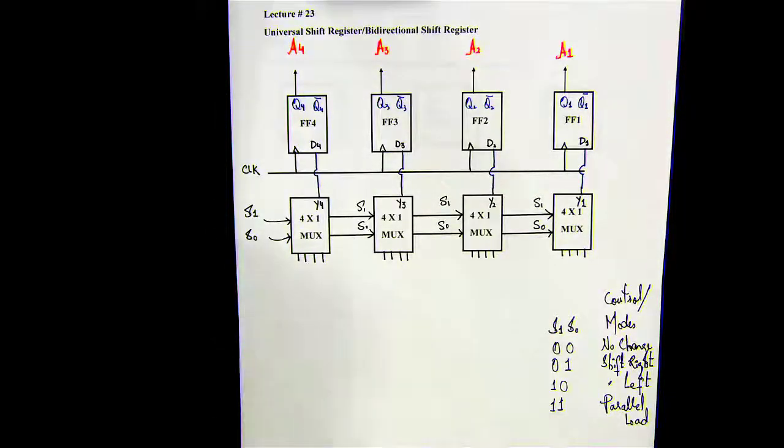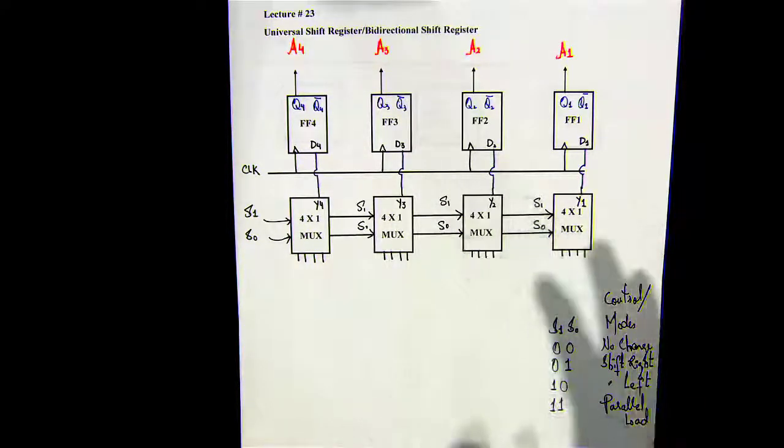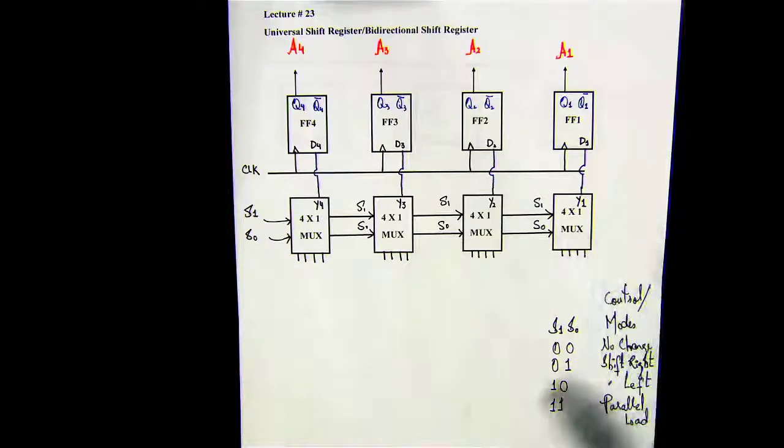So the first mode control is zero zero: no change. A4, A3, A2, A1 are your outputs. How should I wire them up so that whatever we have at A4, A3, A2, and A1 would not change?